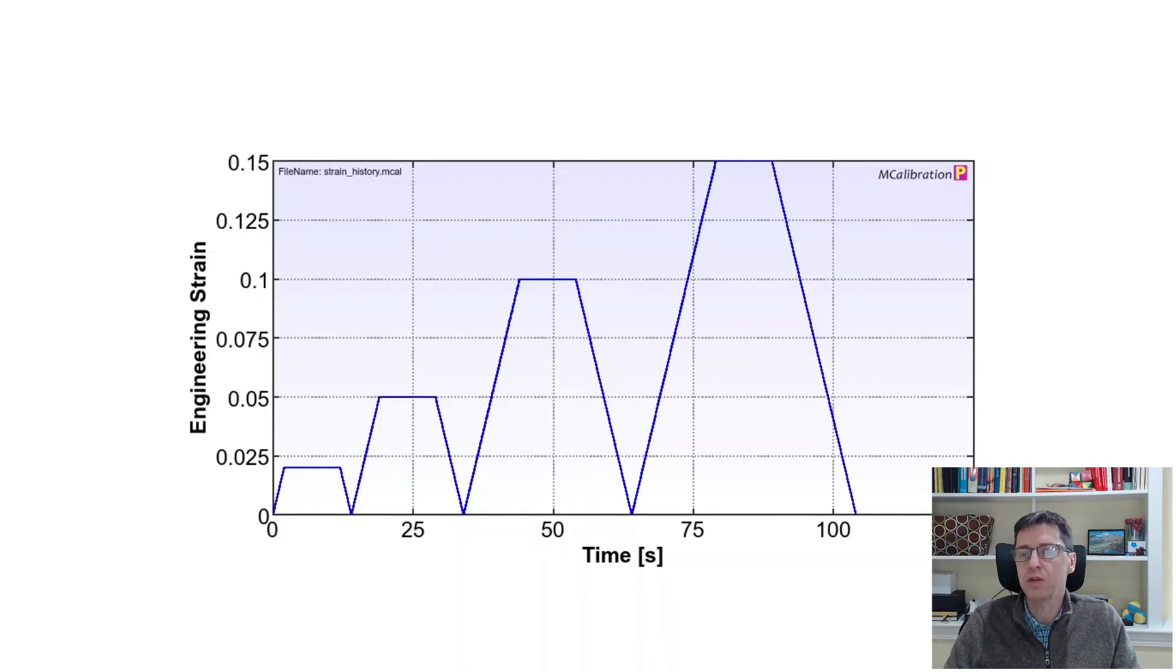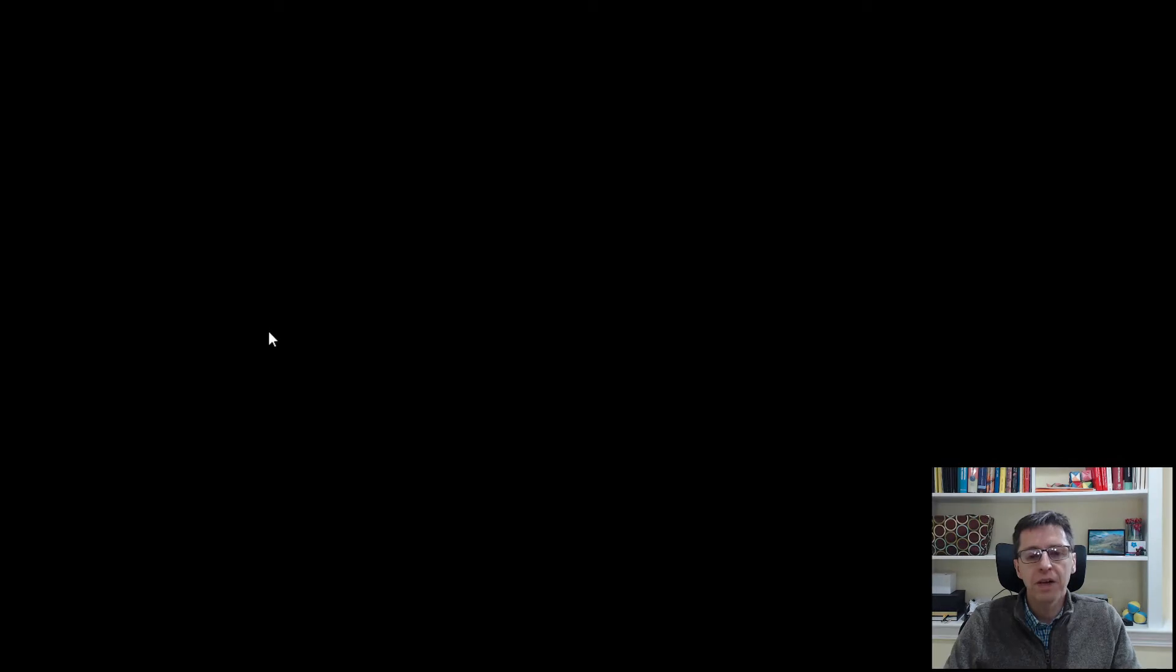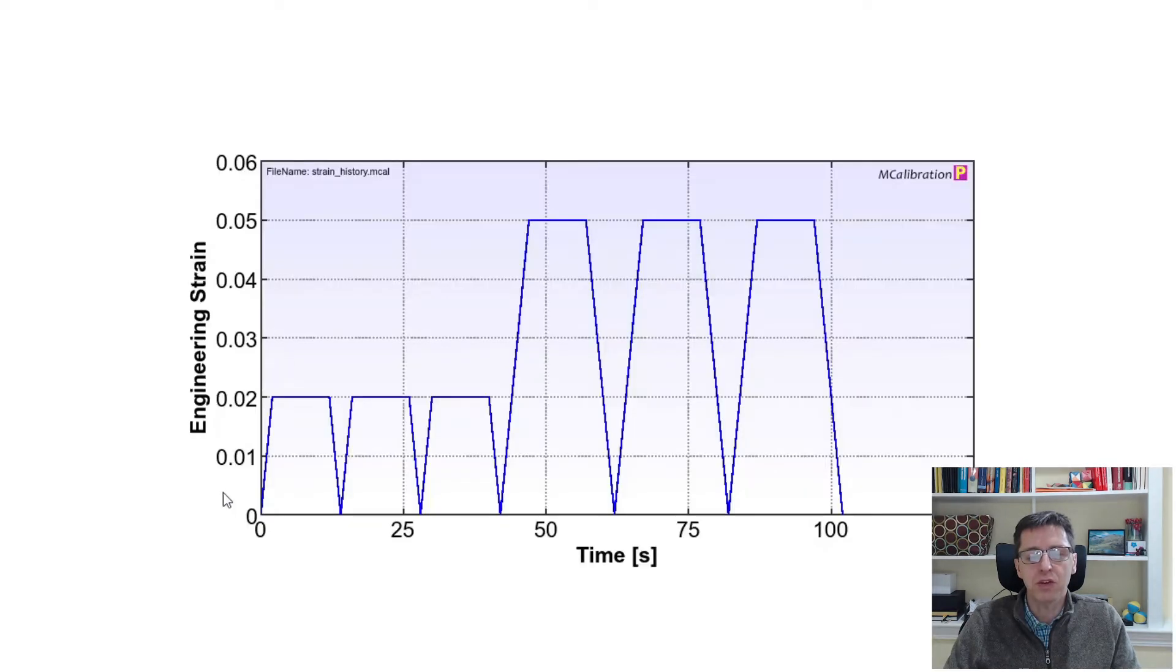Another test that could be useful is to run repeated cycles to the same level of strain. How about this? How about if I go to 2% strain, I hold it, unload it, and then go back to 2%, in this case three times, and then I go to another load level or strain level, 5% strain, and I repeat that, and so forth. What's the value of this? Is this a better test? Is this a smarter test?